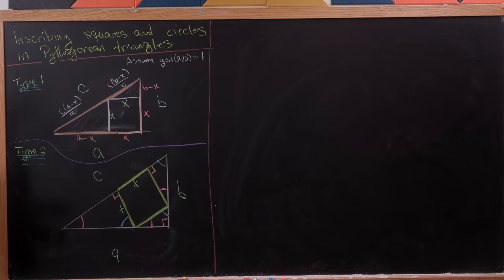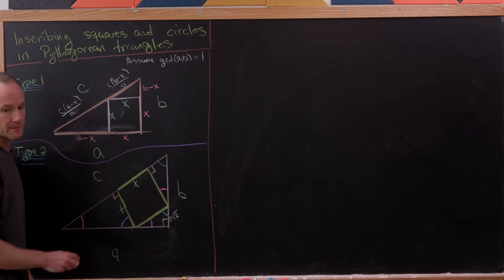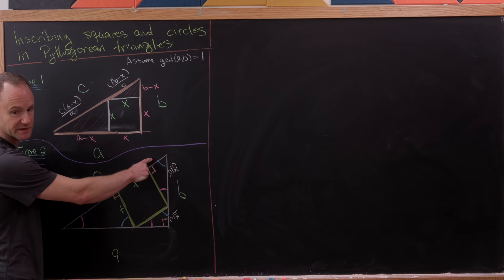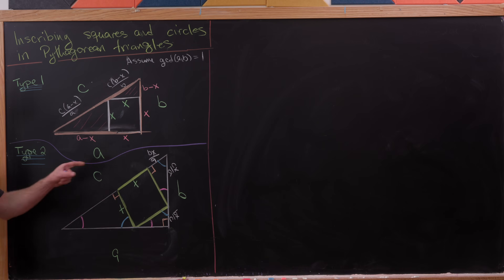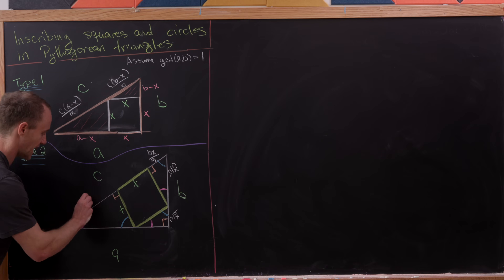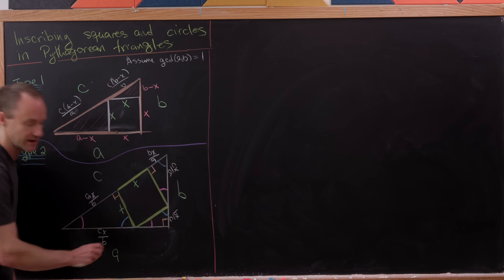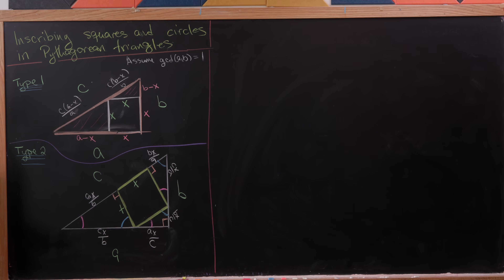Using those similarity equations, we find that the segment along the base is bx/c, the one going up is cx/a, the top piece is bx/a, the bottom-right piece is ax/b, the base-right piece is cx/b, and finally ax/c. So we have measurements of all line segments, with x being the side length of the square.